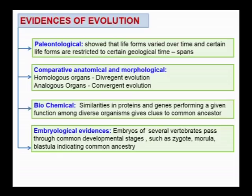Biochemical evidences explain that similarities in proteins and genes performing a given function among diverse organisms give clues to a common ancestor. Embryological evidences show that embryos of several vertebrates pass through common developmental stages such as zygote, morula, and blastula, indicating a common ancestor.